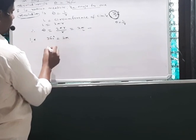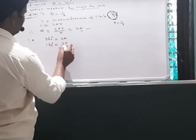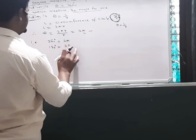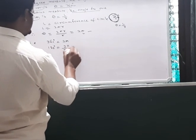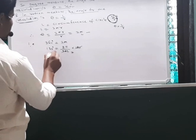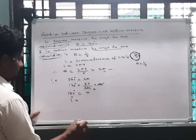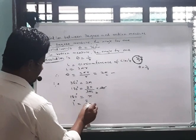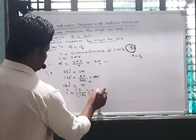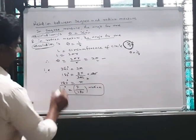So 180 degrees equals π radians. Therefore 1 degree is equal to π divided by 180 radians. This is the relation between degree and radian measure: 1 degree equals π/180 radians.